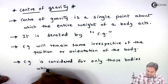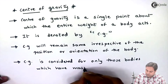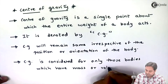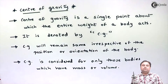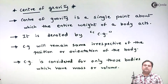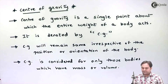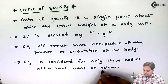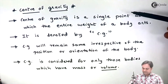CG is considered only for those bodies which have mass or volume. In other words, CG is to be considered only for 3D figures, because 3D figures will have volume.